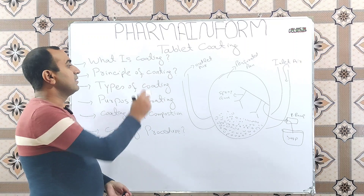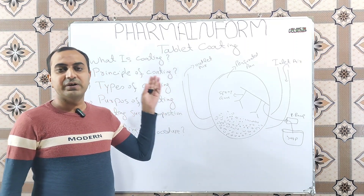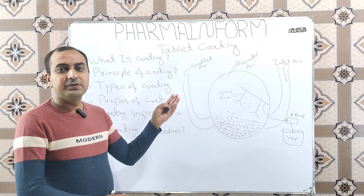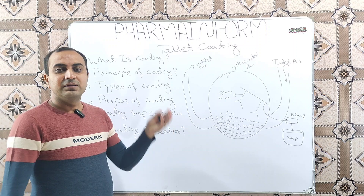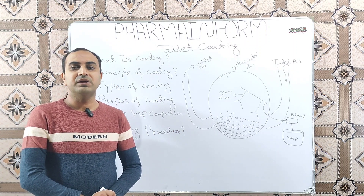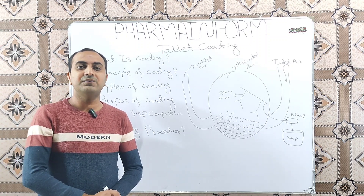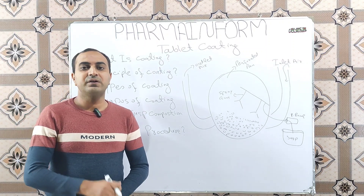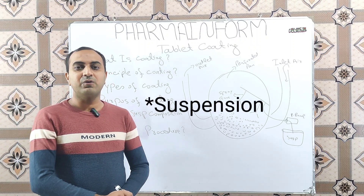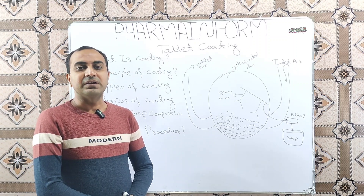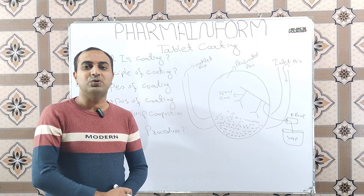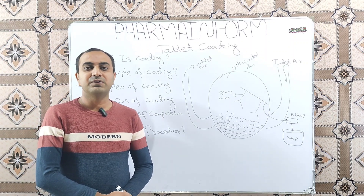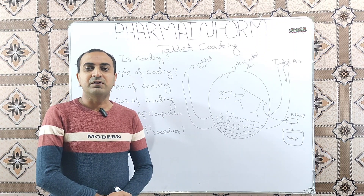What is the principle of tablet coating? It is very important to learn how the tablet coating process works — the basic mechanism or principle. We prepare a suspension of polymers and other ingredients in a suitable solvent. This suspension is atomized and sprayed over a rotating bed of tablets. Heat is applied, which evaporates the solvent, resulting in deposition of solid materials over the tablet surface.